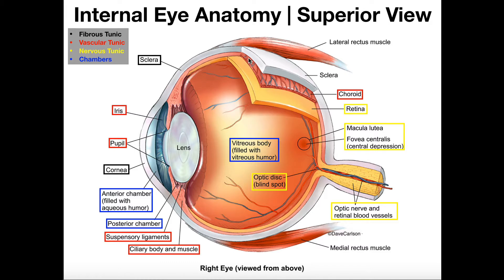Here we're going to look at the internal anatomy and just a little bit of external. The eye as a whole is divided into what we call three tunics. A tunic is a fancy term for an article of clothing — basically a layer — and you can put multiple layers of clothes on. Each of these tunics represents a different layer of the eye. The most superficial of these is going to be the fibrous tunic, so that's what we'll look at first.